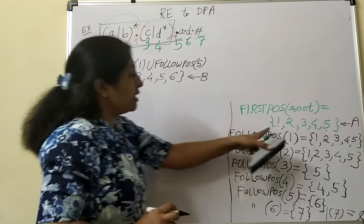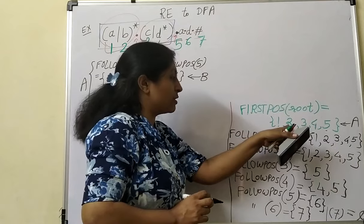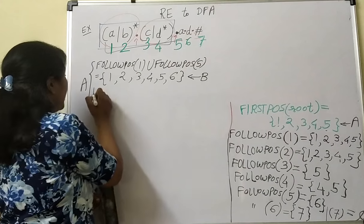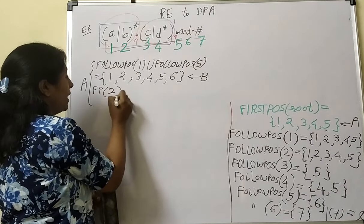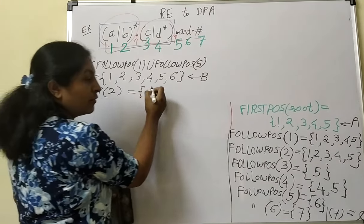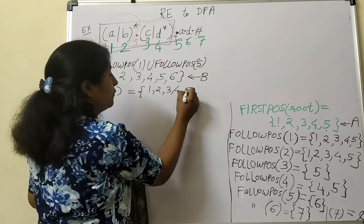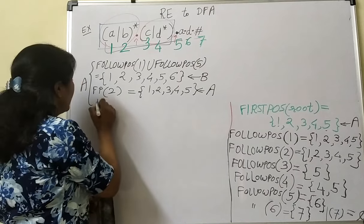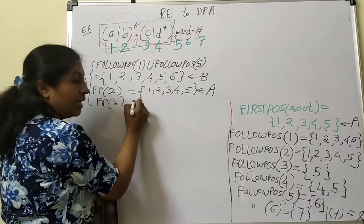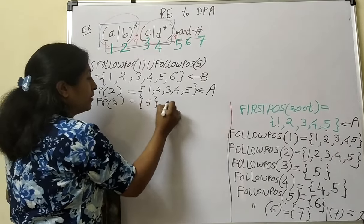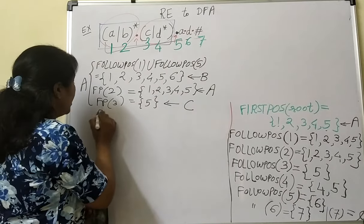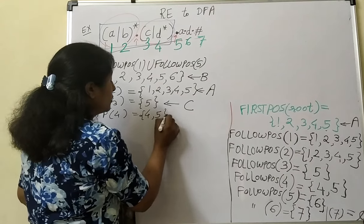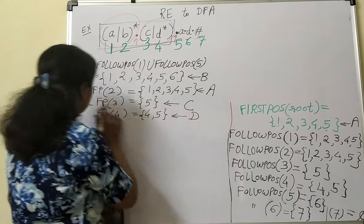After considering 1 and 5, take follow positions of 2, 3, and 4 independently. Follow position of 2 is {1, 2, 3, 4, 5}, which is state A itself. Follow position of 3 is {5}, giving new state C. Follow position of 4 is {4, 5}, giving new state D.